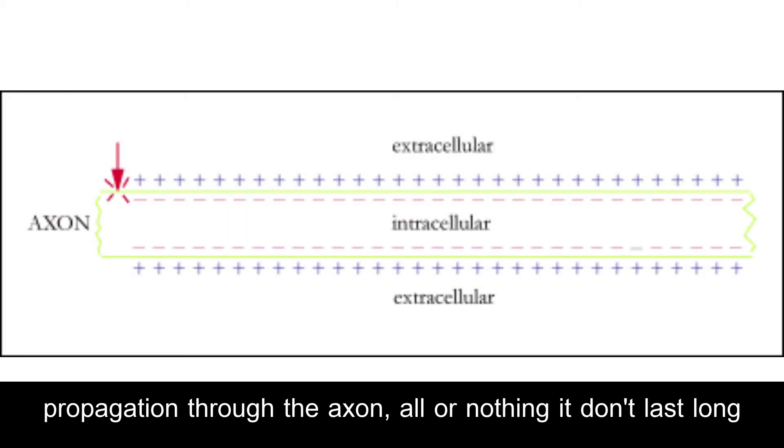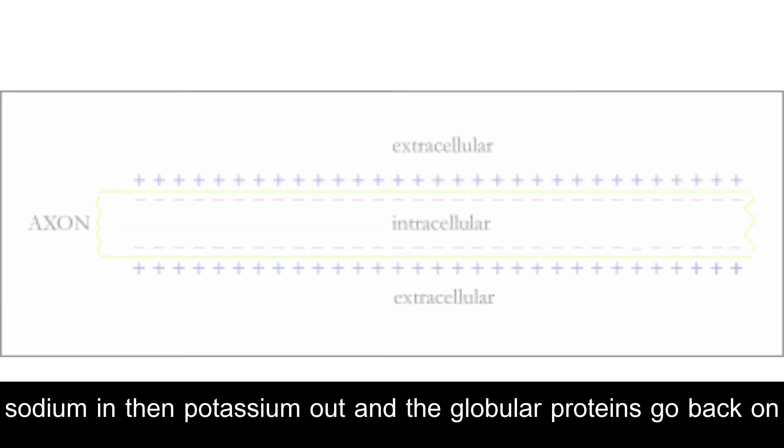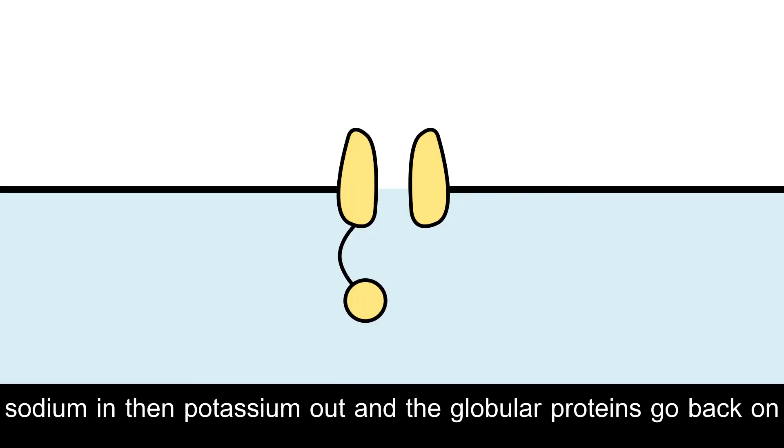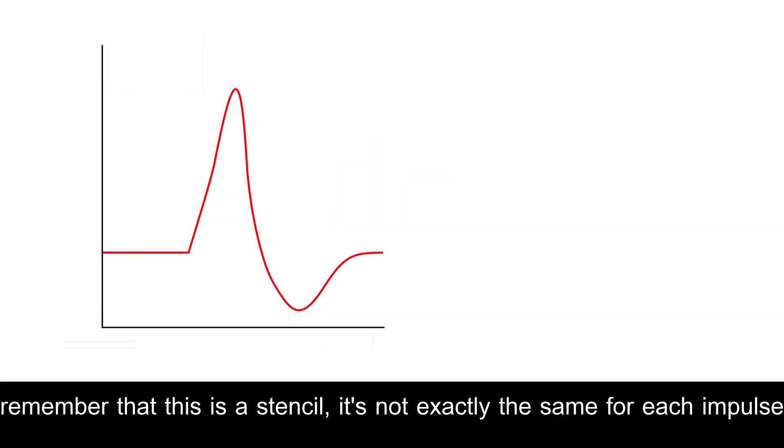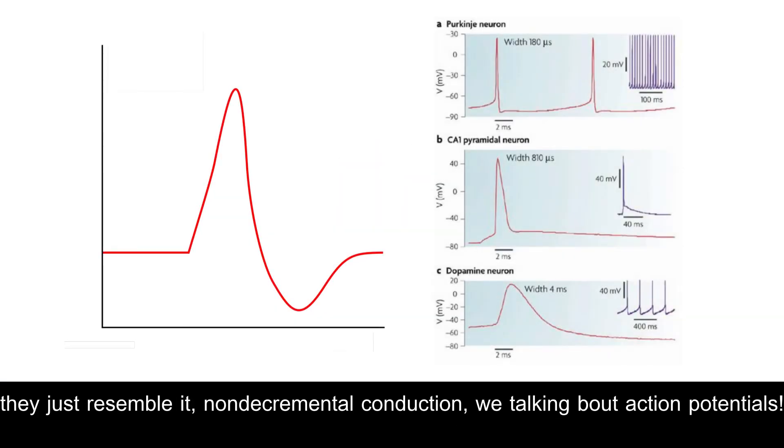Propagation through the axon, all or nothing, it'll last long. Sodium and then potassium out, and the globular proteins go back on. Remember this graph is a stencil, it's not exactly the same for each impulse, they just resemble it.